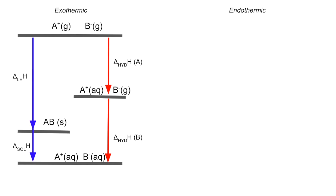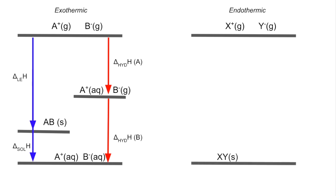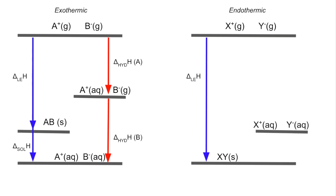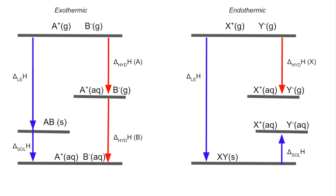Now for the endothermic cycle, using XY as the example. Again the gaseous ions are the highest in energy. Bringing them together to form one mole of the ionic solid gives the lattice enthalpy. This time the enthalpy change of solution is endothermic, so the aqueous ions come up and the arrow connecting the solid to the aqueous ions points upwards. To complete the cycle we do the two hydration enthalpies one at a time: X⁺ gaseous to X⁺ aqueous is the enthalpy change of hydration of X, and likewise for Y.